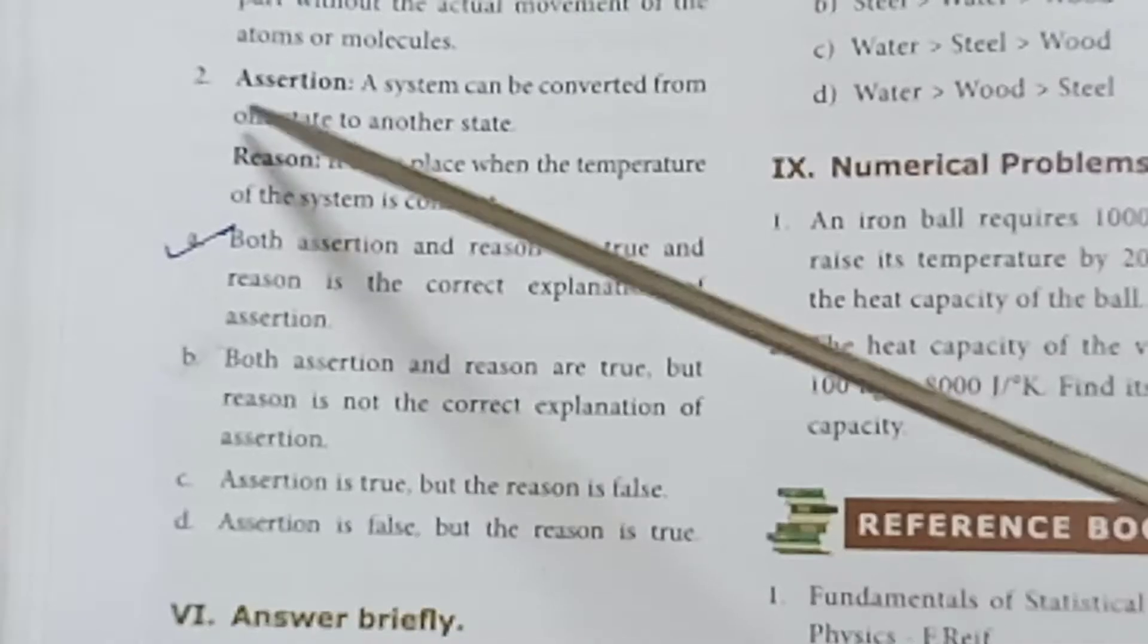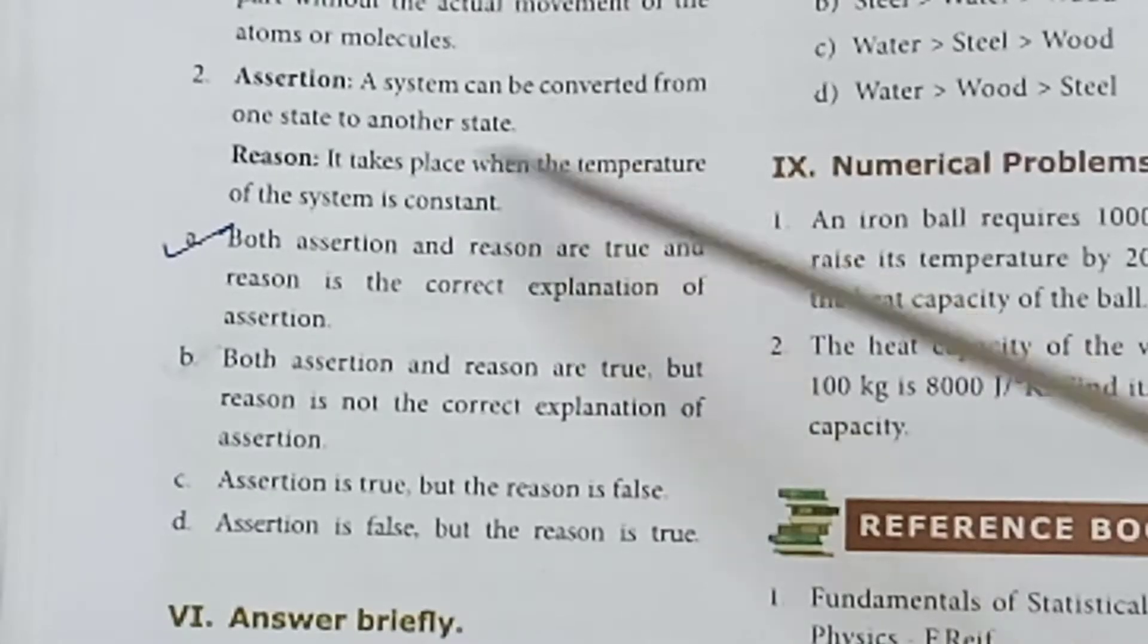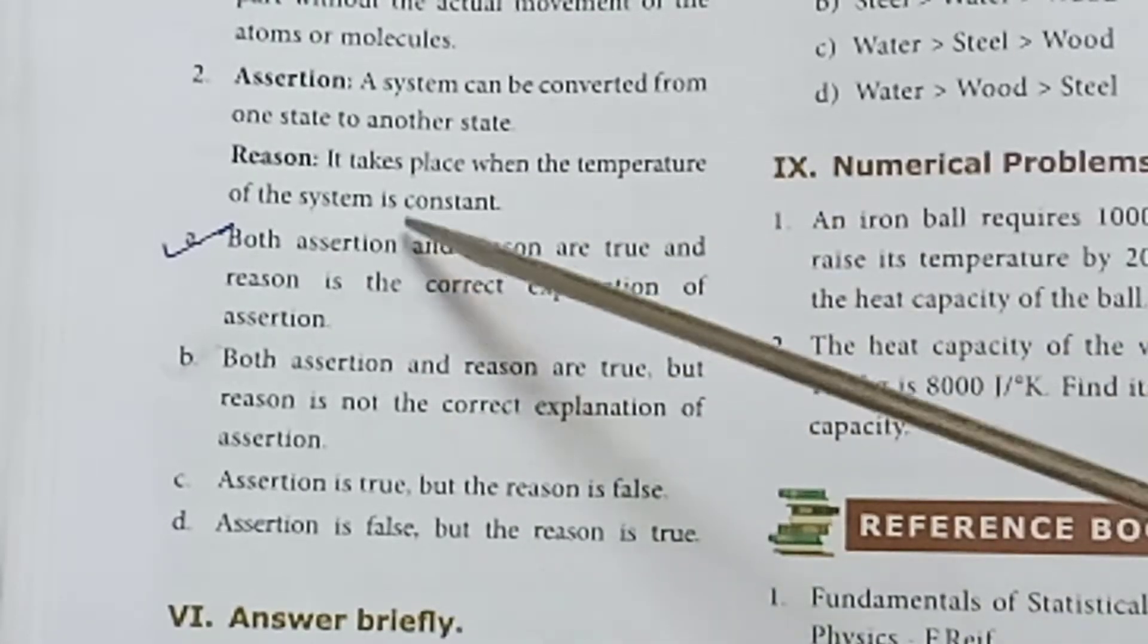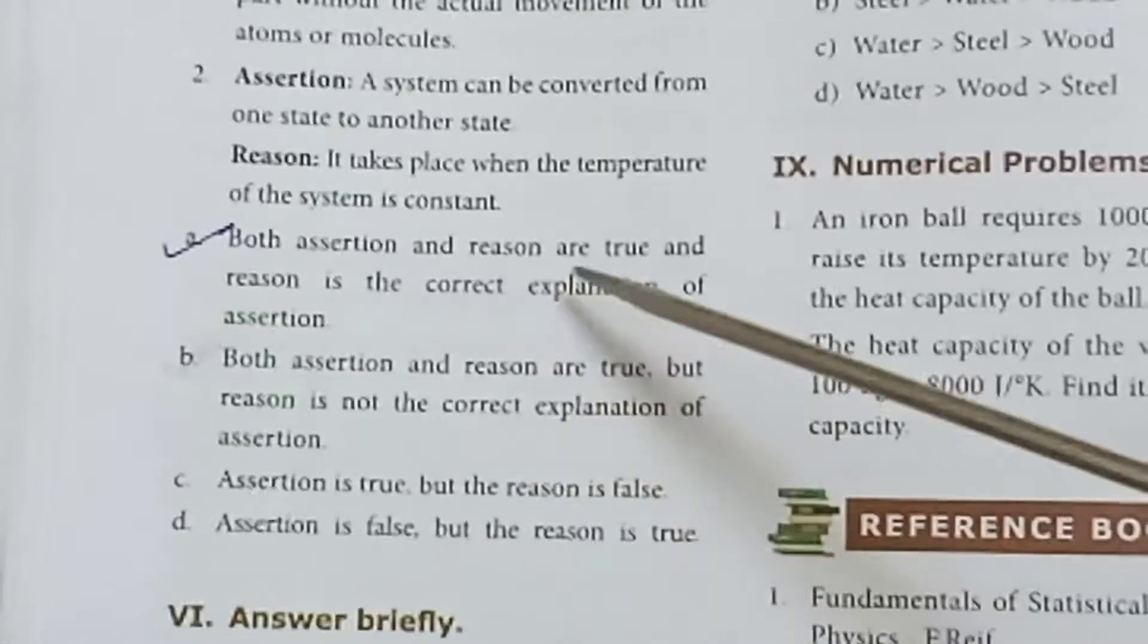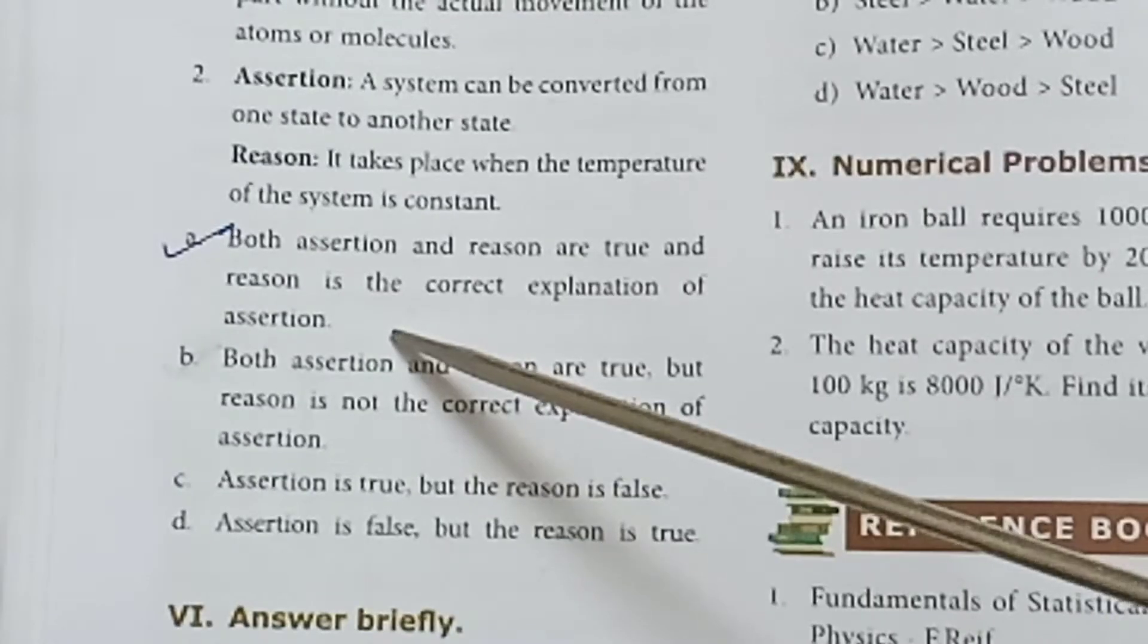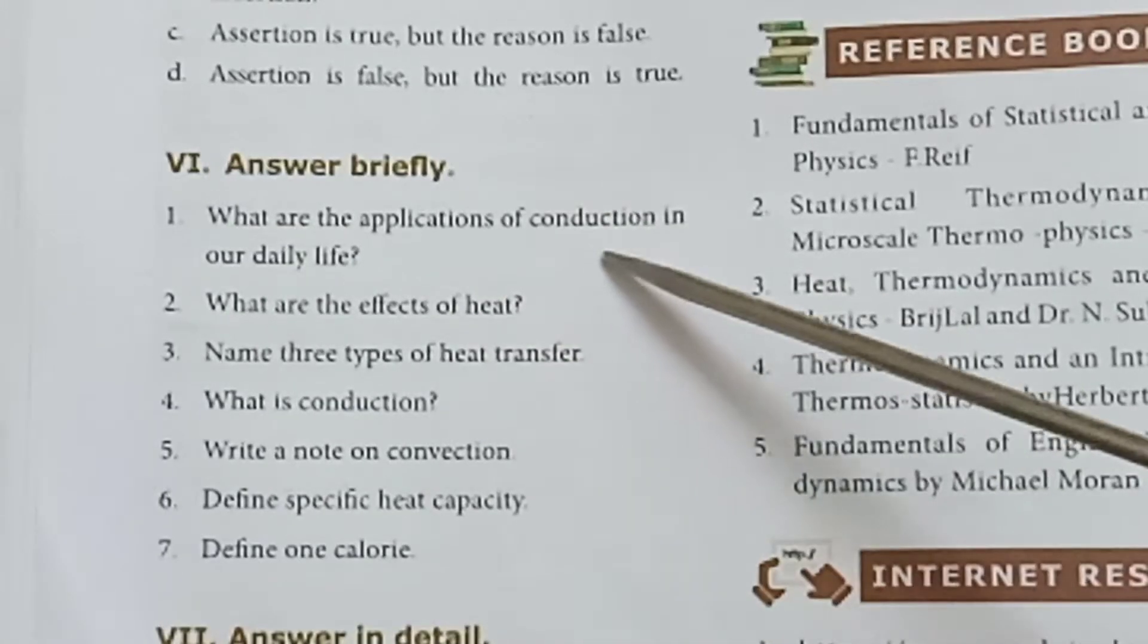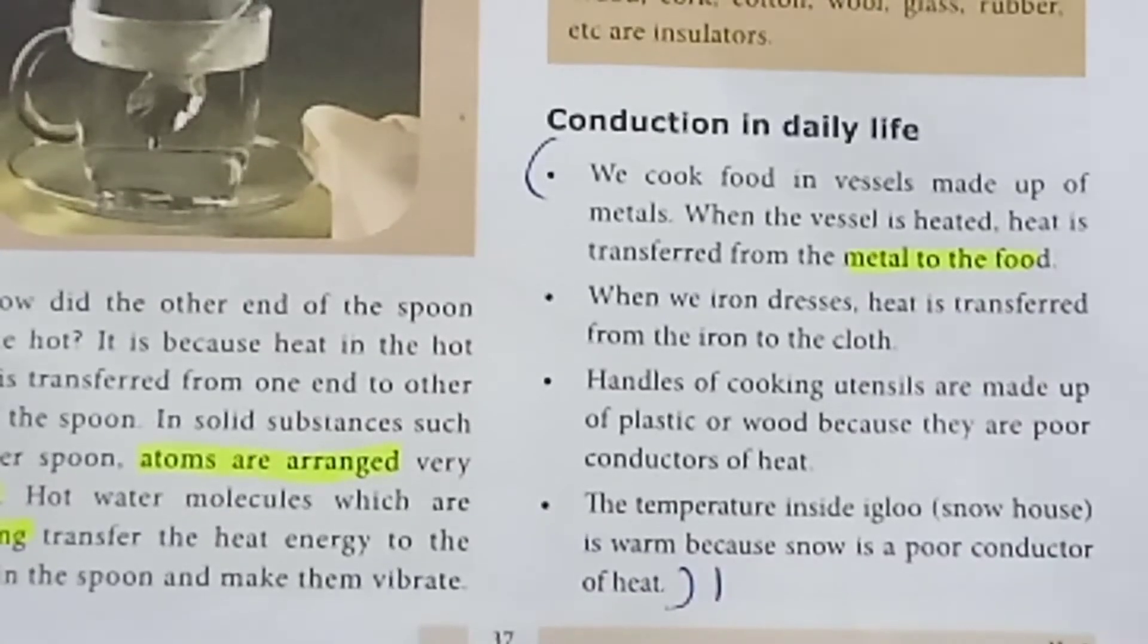Second one: Assertion: A system can be converted from one state to another state. Reason: It takes place when the temperature of the system is constant. Answer: A, both assertion and reason are true and reason is the correct explanation of assertion. Number 6, answer briefly.